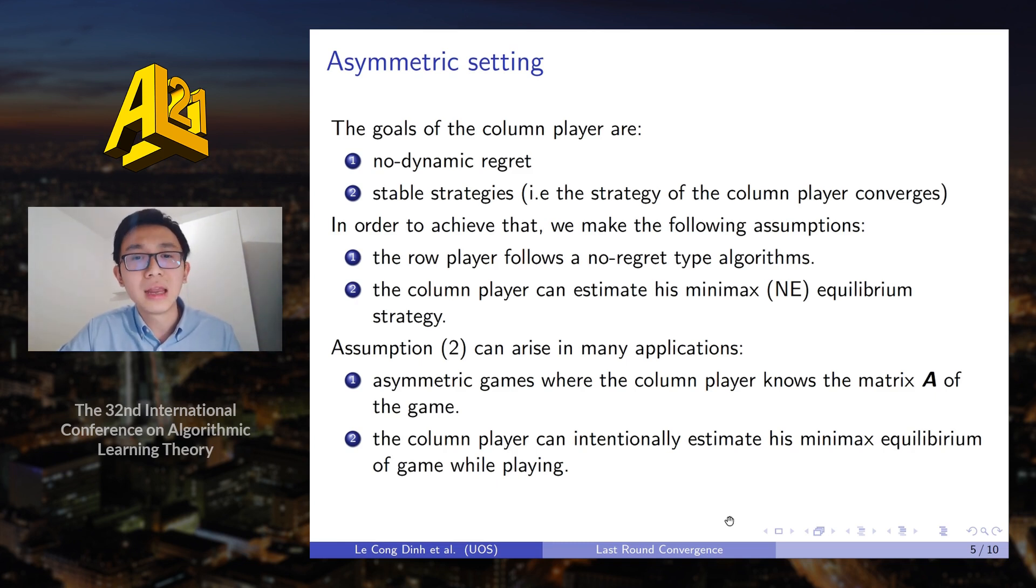Secondly, the column player can intentionally play a no regret algorithm against the row player and estimate his min-max equilibrium of the game while playing. So with this assumption, we come up with our main theorem.